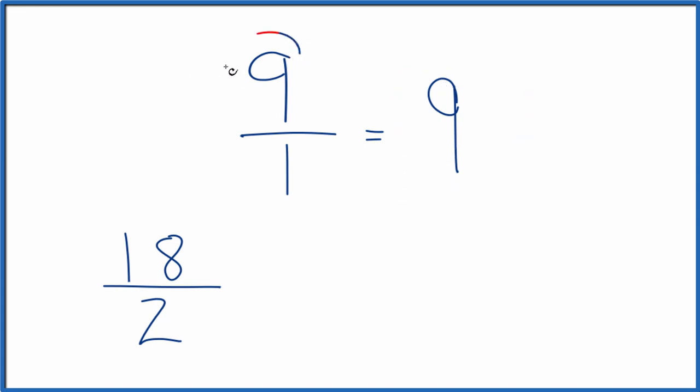We can do another one. Let's multiply the numerator and denominator by 3. 3 times 9, that's 27. 3 times 1 is 3.